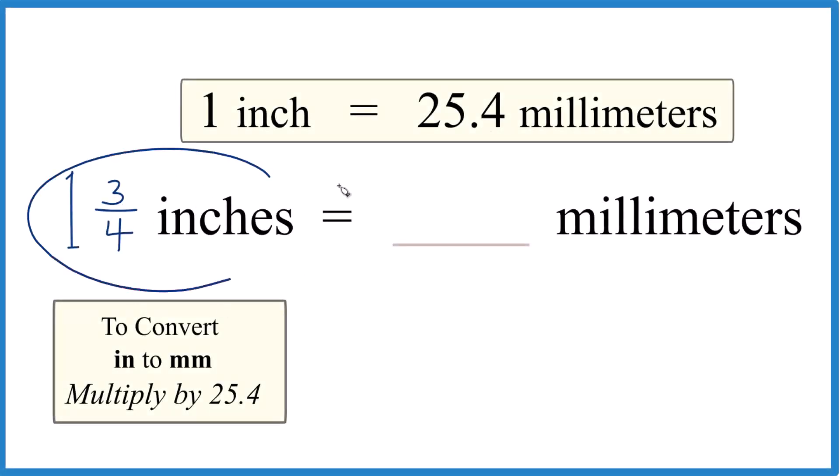If you have one and three-fourths inches, you need to get that to millimeters. Here's how you do it. It's probably easiest to start out - let's convert this to a decimal. That makes it a lot easier to go from inches to millimeters.